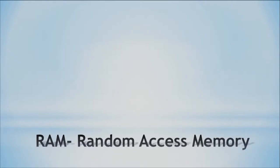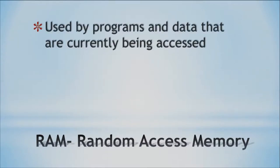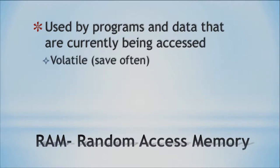We start with primary memory — the quintessential primary memory — which is random access memory. This memory is used by programs and data that are currently being accessed. Whatever is running in your computer right now, for example PowerPoint is running in my computer right now, so PowerPoint is currently in random access memory. It's volatile, so if you don't save, it's going to go bye-bye — it's equivalent to your dog eating your homework.